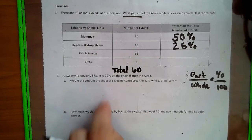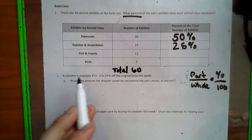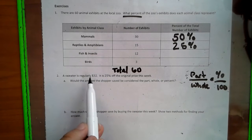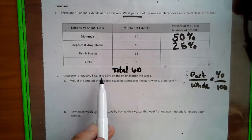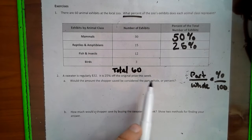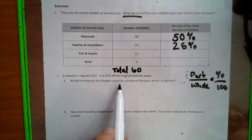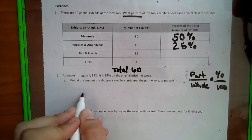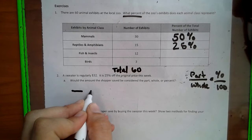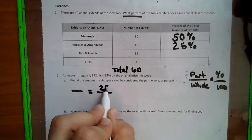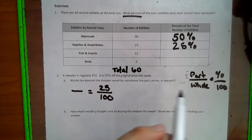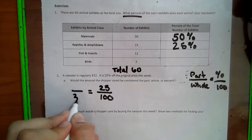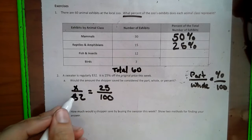Now I'm going to show you a little bit different of what it looks like when it's in a real life situation. A sweater is regularly $32 and is 25% off the original price this week. We can put that into a proportion to see what the discount is going to be. So we have 25% over 100 because all percents go over 100. The sweater is regularly $32 and we get to find out what the 25% off is going to be.